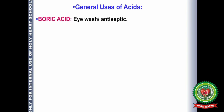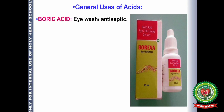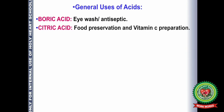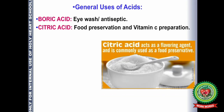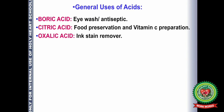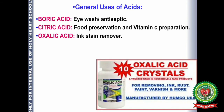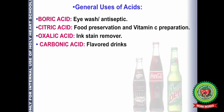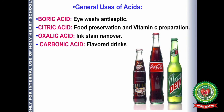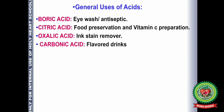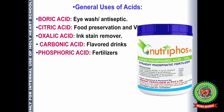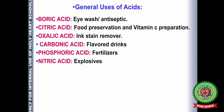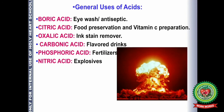Now let's discuss the uses of acids. Boric acid is used for eye washing and as an antiseptic. Citric acid is used for food preservation and vitamin C preparation. Oxalic acid is used as an ink stain remover. Carbonic acid is used in flavored drinks. Phosphoric acid is used as a fertilizer. Nitric acid is used in making explosives.